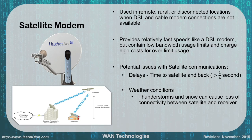The next technology is a satellite modem. These are used in remote, rural, and disconnected locations when DSL and cable modem connections aren't readily available. It gives you fast speed like a DSL modem, but the big problem is low bandwidth usage limits and charges for going over that limit. Additionally, because of the space geometry, when you go online your signal travels from you up to the satellite, down to the service provider, then out to the internet. Every up or down leg adds about an eighth of a second delay — roughly a quarter second total — making it unsuitable for VoIP services.